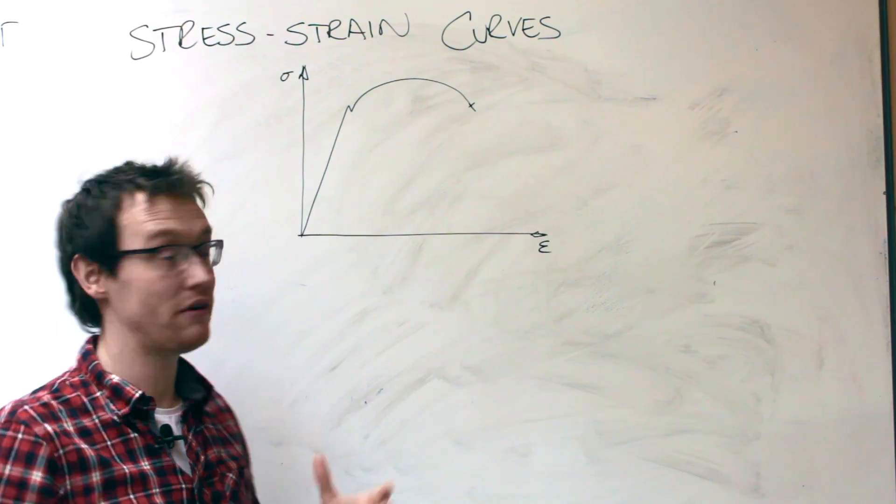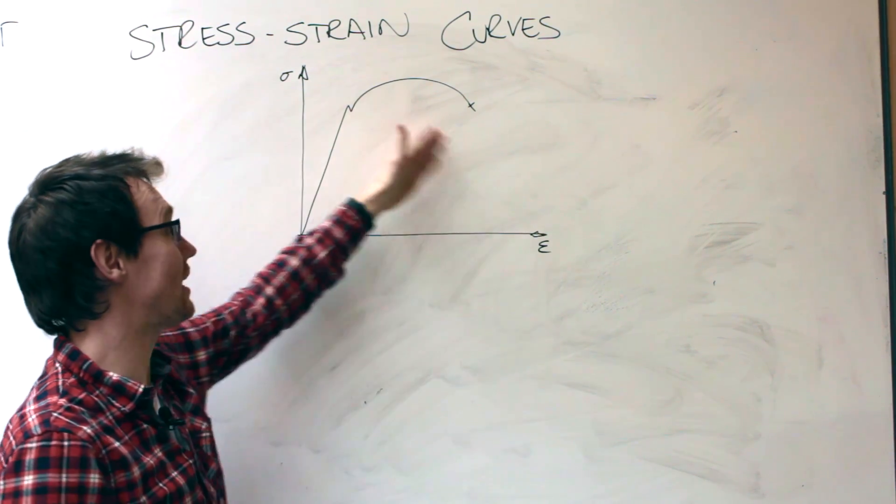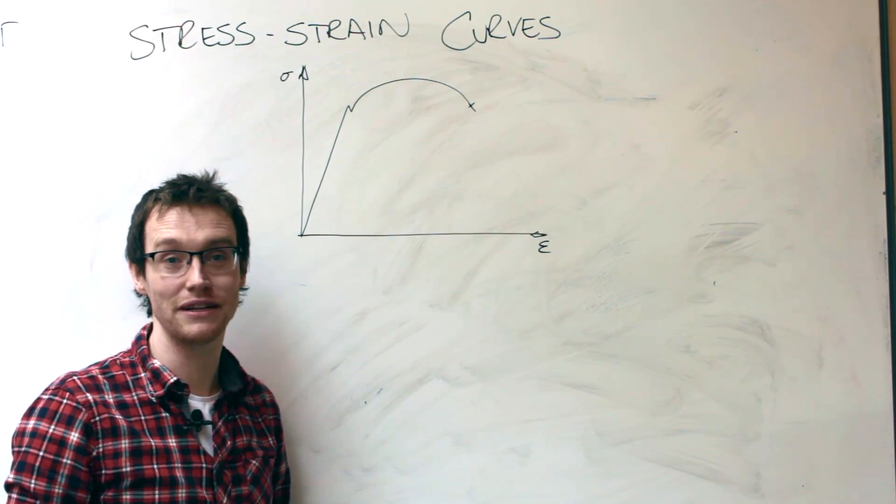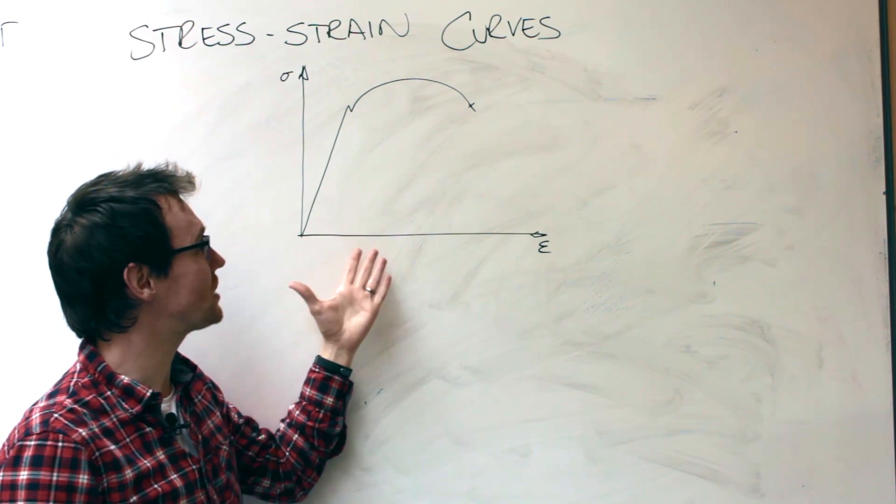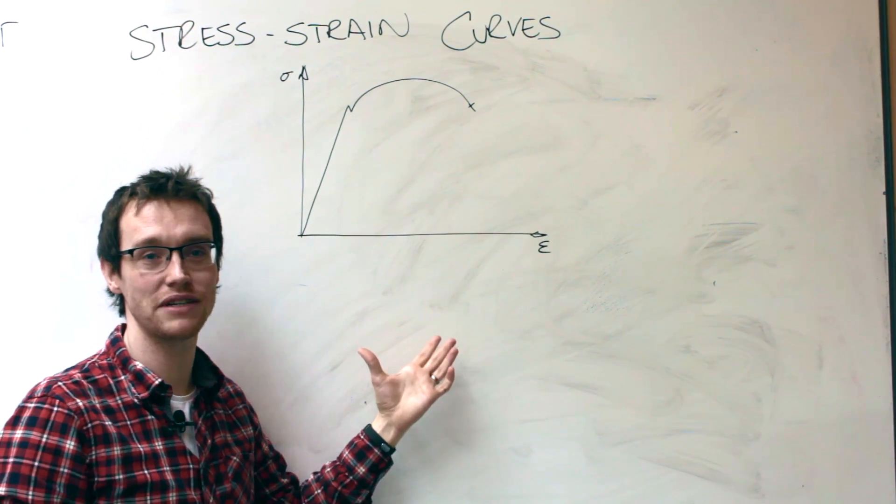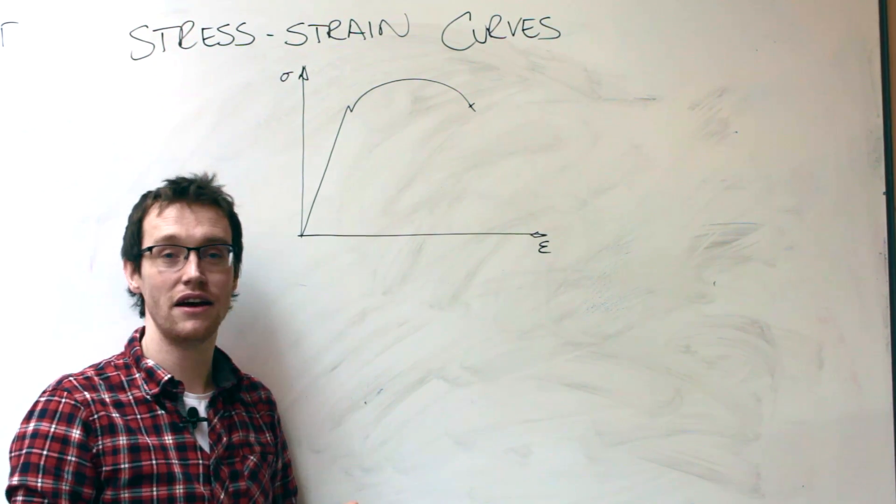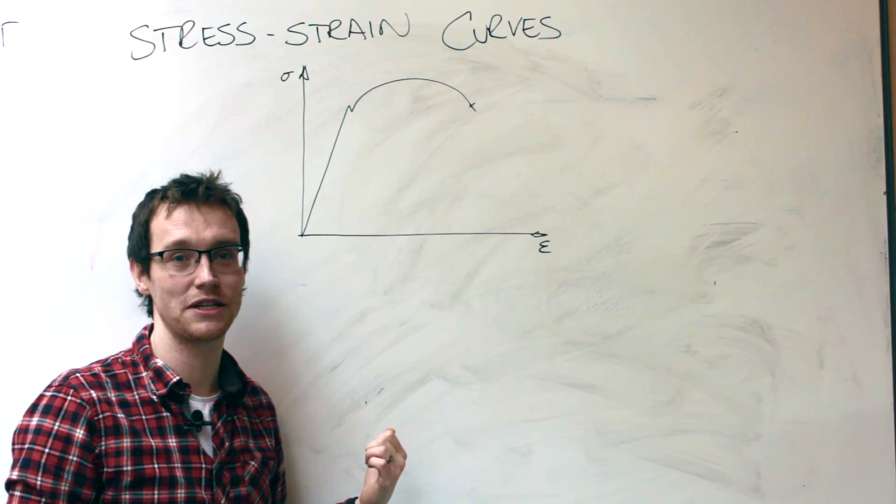And for a ductile material, very often you'll get a curve that looks something like this. And this is a classic curve that's in all kinds of engineering textbooks. If you do tensile testing on a variety of metals you'll see something very similar to this.